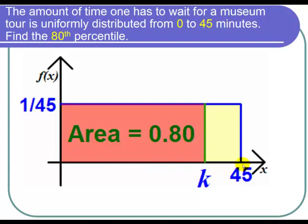The height of this rectangle must be 1 over 45 so that the area is the base times the height.